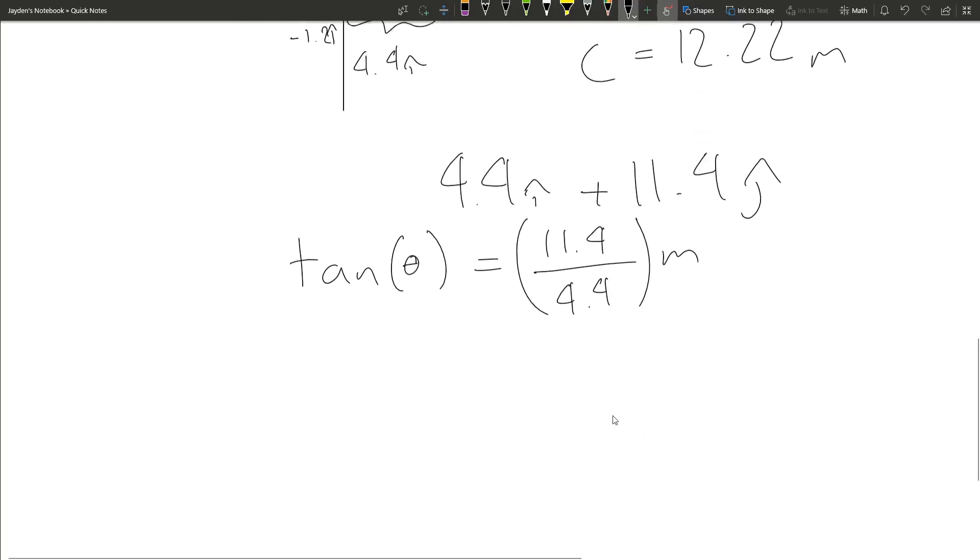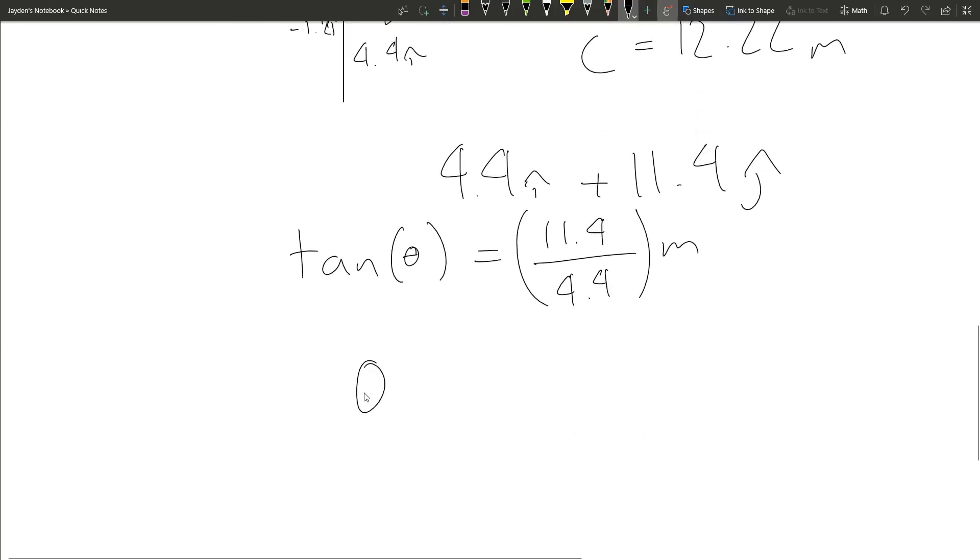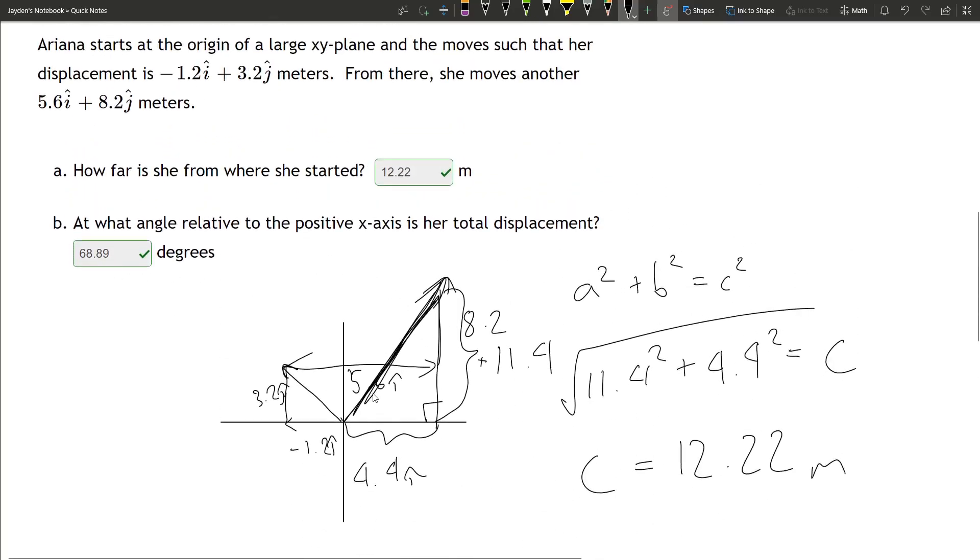If we want to find theta, we just do the inverse tangent of 11.4 over 4.4. That should get us 68.89 degrees, which if we look up here is reasonable for our graph.